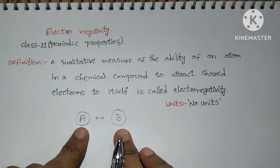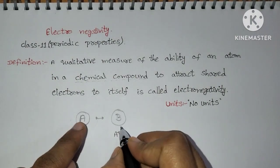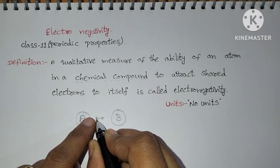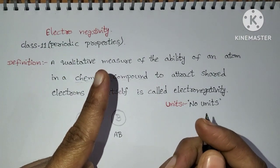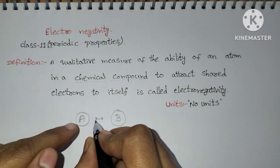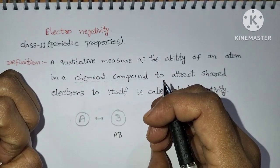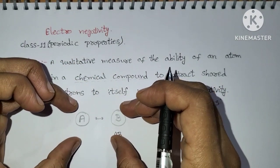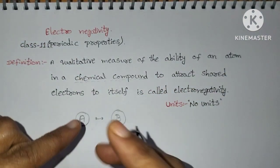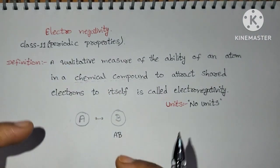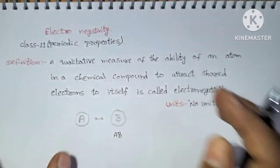Consider a molecule AB. In this molecule, A has contributed one electron and B has also contributed one electron, and both together they have formed one single bond — so two electrons are shared. On these two electrons, the nuclear charge of both atoms is present. Whichever atom is attracting these electrons more effectively has more electronegativity; whichever attracts with less force has less electronegativity.